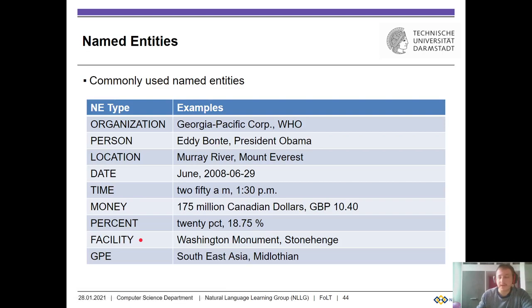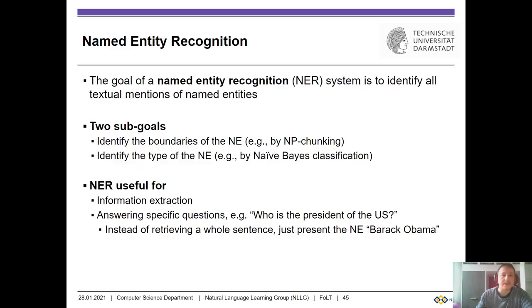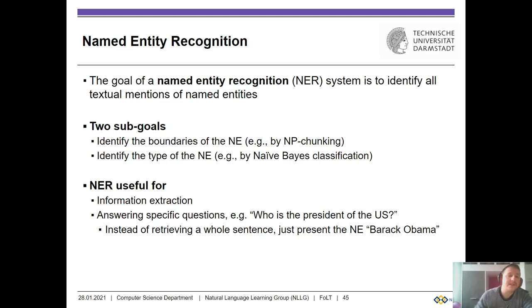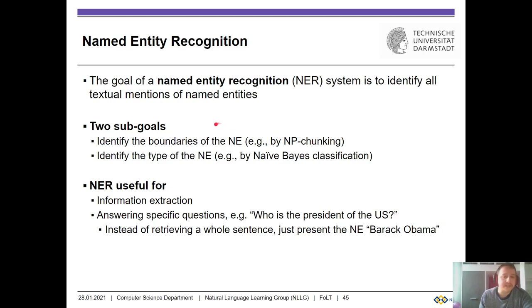These are common named entities used in the literature. The goal of named entity recognition, also abbreviated as NER, is to identify all textual mentions of named entities in a text document. This has two sub-goals. The first is to detect the boundaries, which we could solve by NP-chunking. We detect the boundaries using NP-chunking, but then we sub-categorize. Afterwards we filter out some NP-chunks, because not all NP-chunks are named entities. In general, we can detect boundaries by doing some sort of BIO-tagging, as we've seen previously.